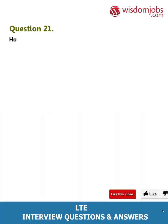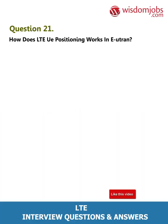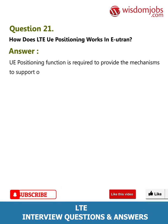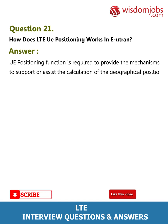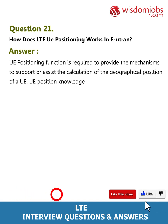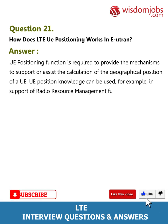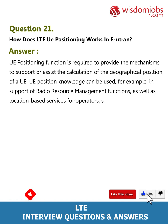Question 21: How does LTE UE positioning work in E-UTRAN? Answer: The UE positioning function is required to provide the mechanisms to support or assist the calculation of the geographical position of a UE. UE position knowledge can be used, for example, in support of radio resource management functions as well as location-based services for operators, subscribers, and third-party service providers.